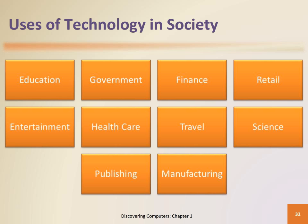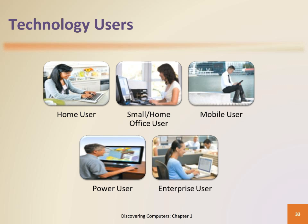Technology has changed society today and people interact directly with technology in a number of fields: to assist with education, to provide citizens with up-to-date information, to take care of banking and finances, to purchase products and services, to listen to audio, watch videos, read a book, or play a game, to research health care issues, to plan travel, to assist with research, to publish online, and to assist with manufacturing, fabrication, and assembly. This applies to various user types: home users, small or home office users, mobile users, power users, and enterprise users.